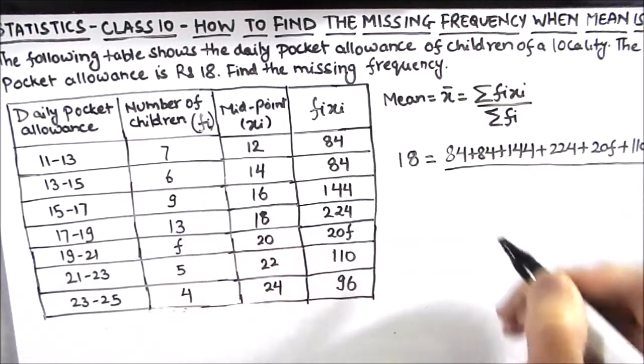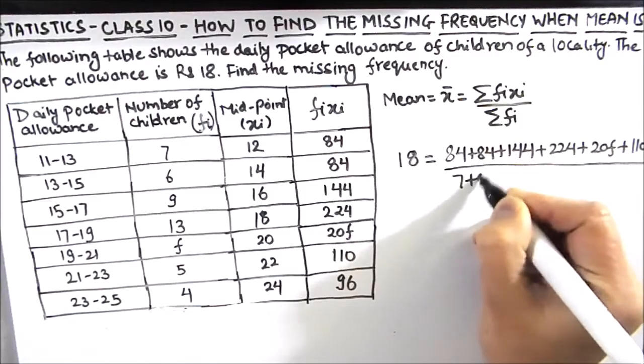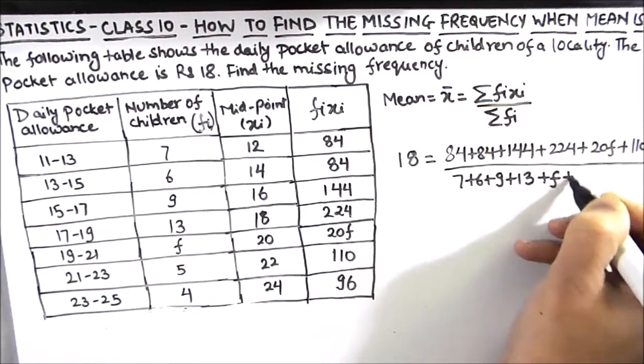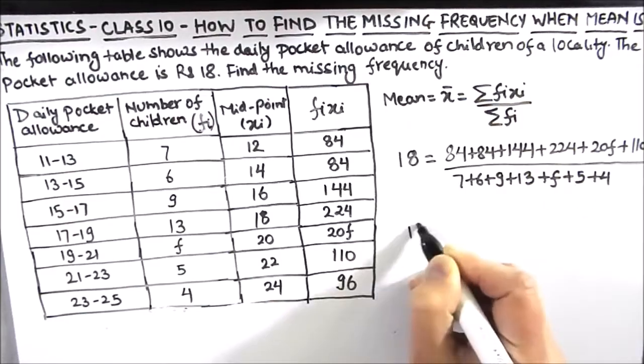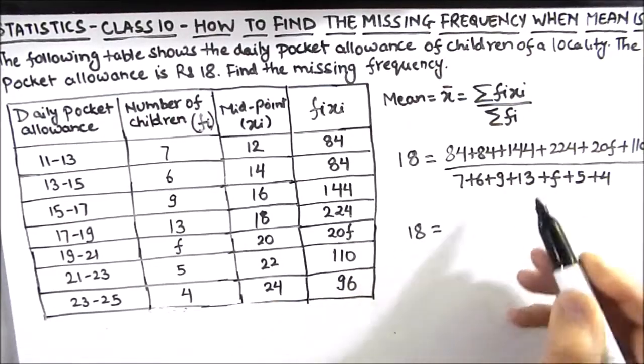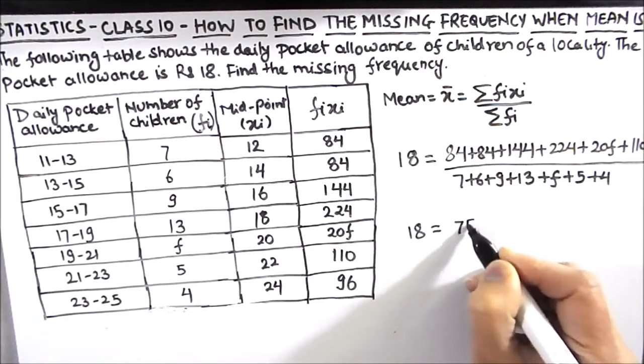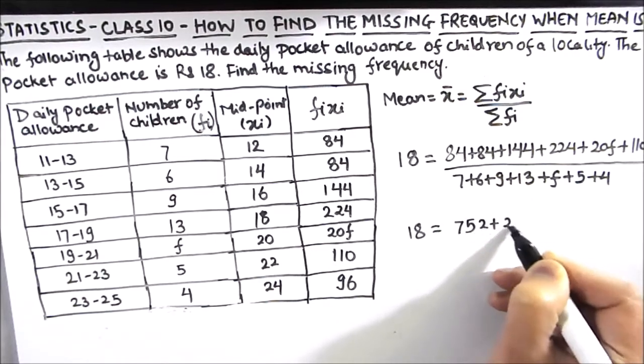And summation of frequency will be addition of all these frequency, which is 7 plus 6 plus 9 plus 13 plus f plus 5 plus 4. So 18 equals, if we add all these numbers, we are going to get 752 plus 20f.